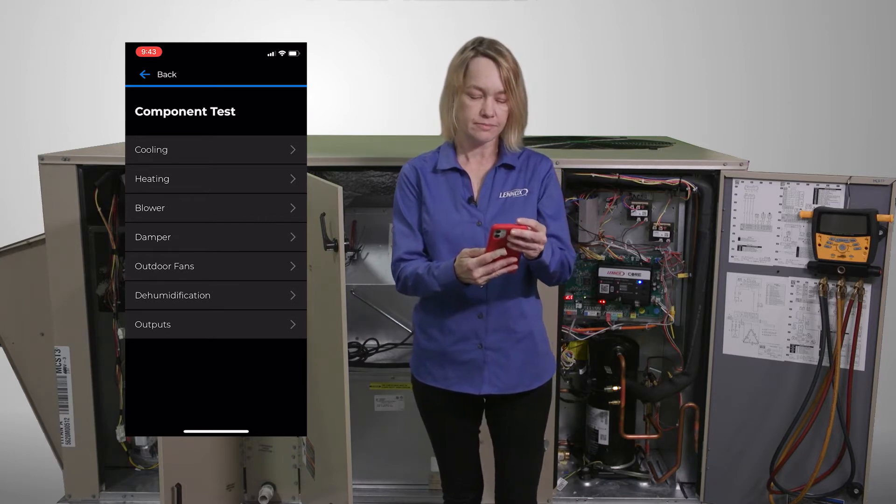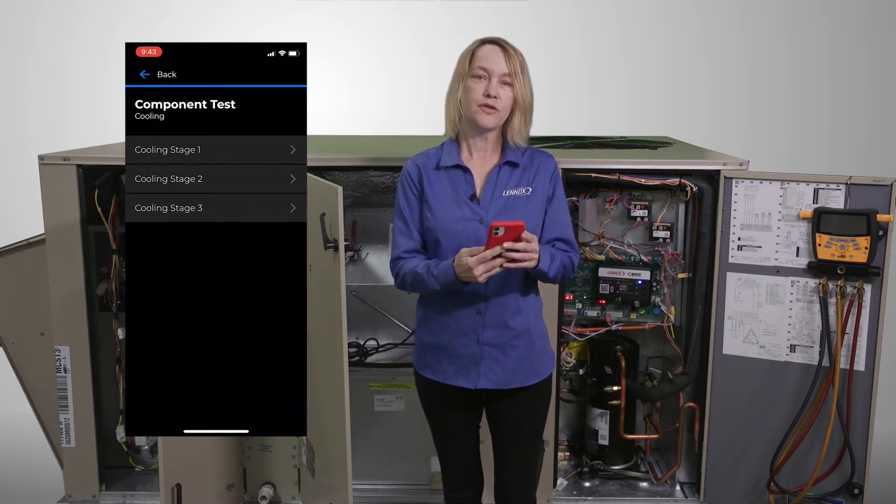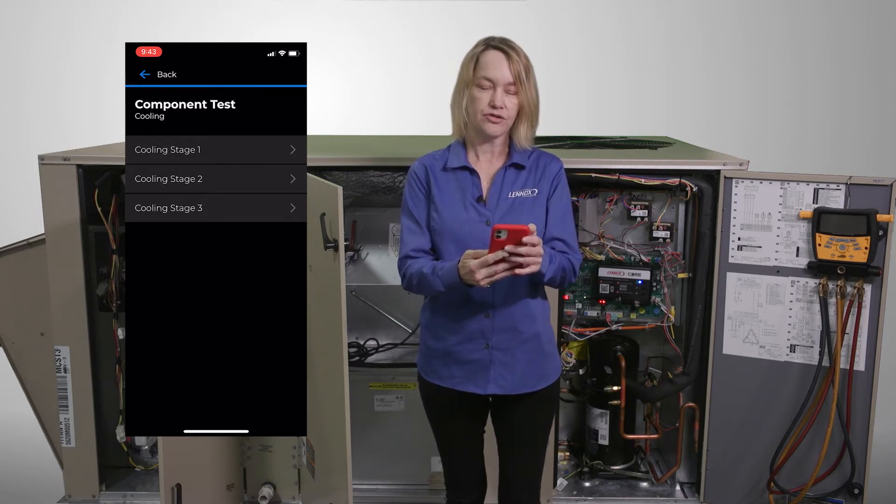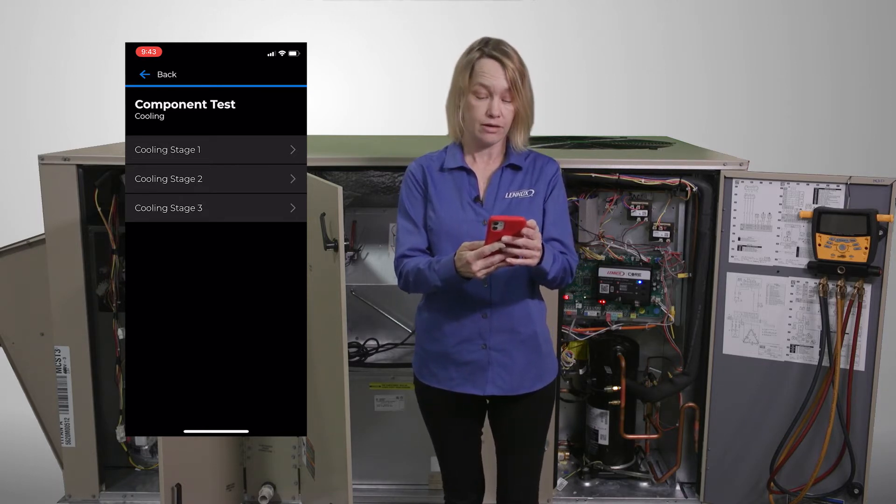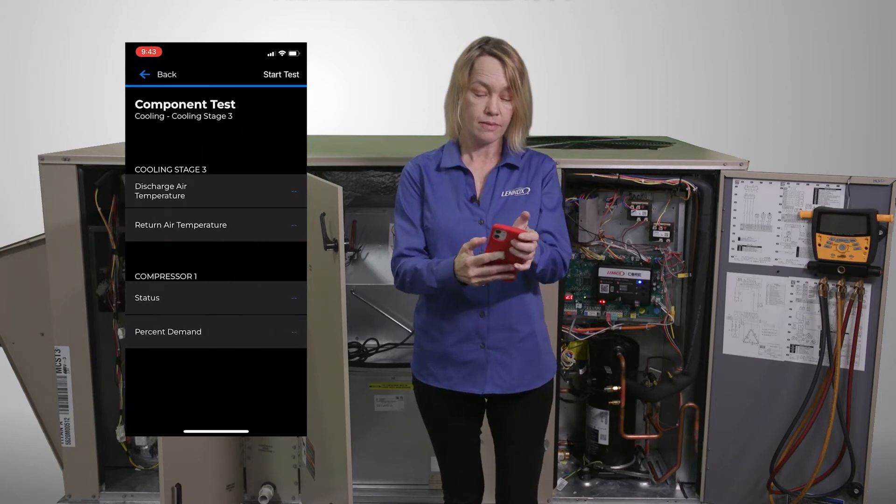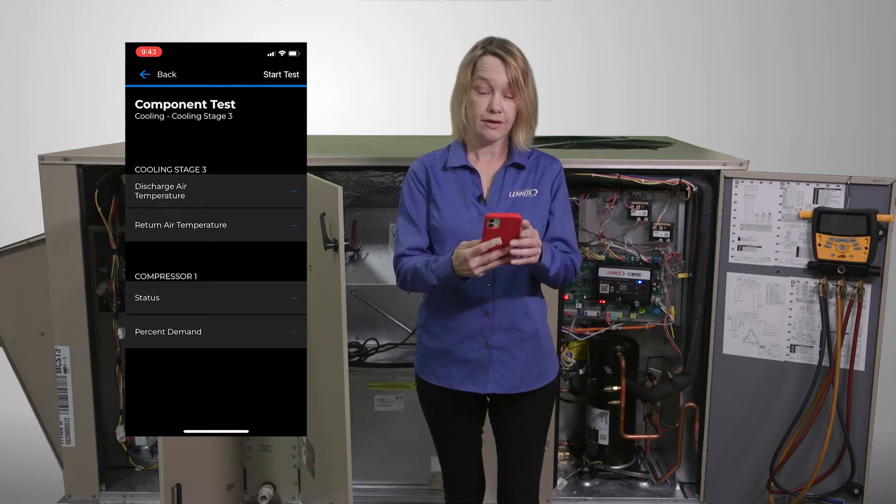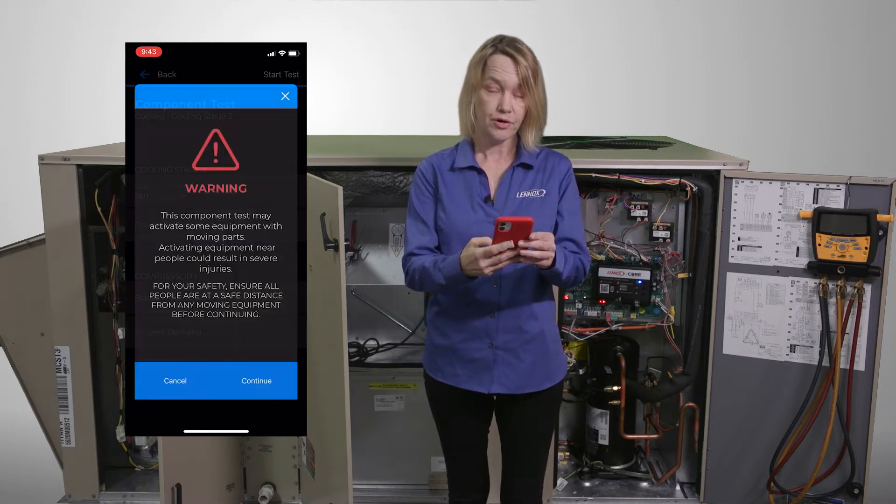Let's start with the cooling test. We want to make sure that the unit is in a full call for cooling, so we'll select the highest cooling that we can. We enter the test menu, press start test. Make sure no one's in the way of the blower. Press start.